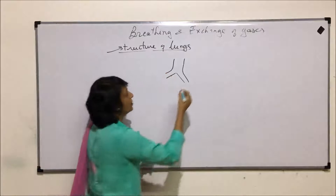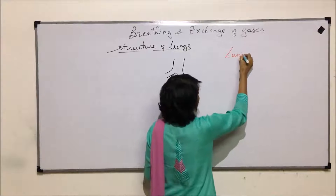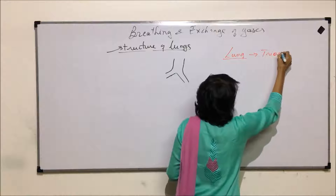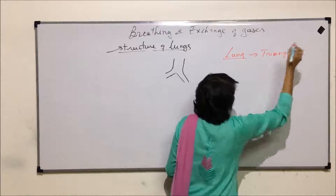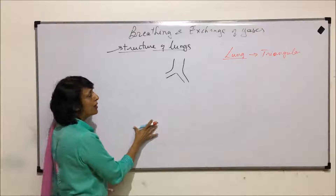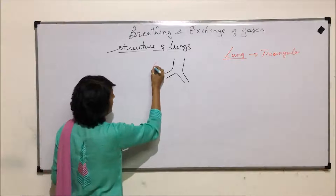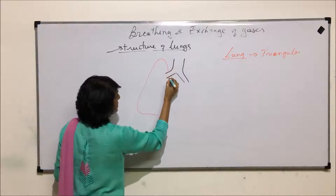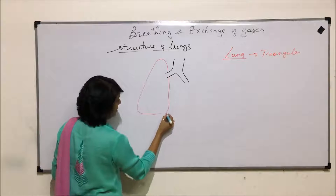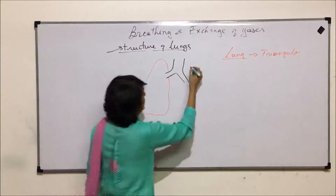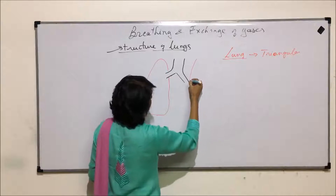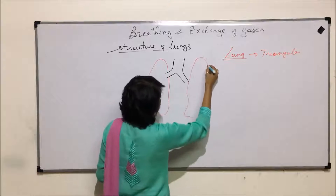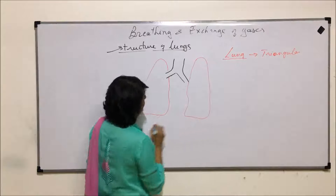Each lung is a triangular structure. The upper end is pointed and the lower end is wider. The upper end is conical or triangular and the lower one is wide. The same is the case with the left lung. The left one is smaller than the right one.